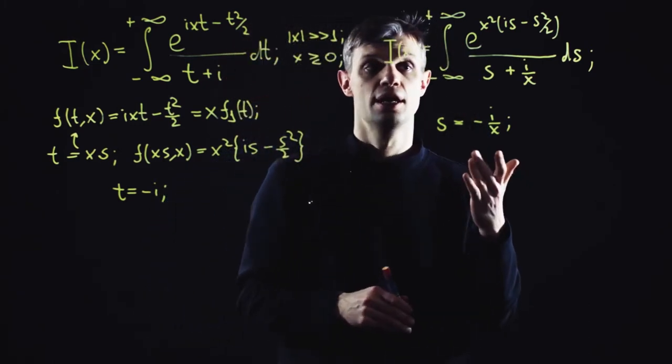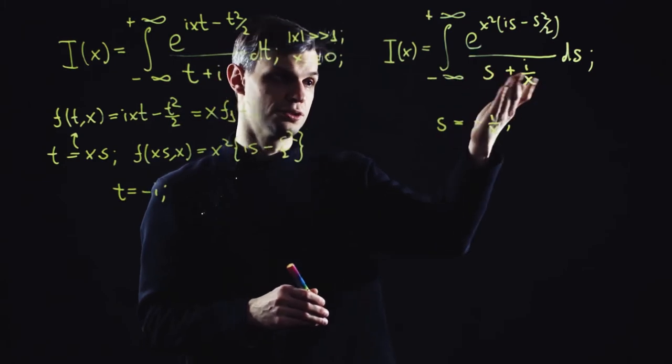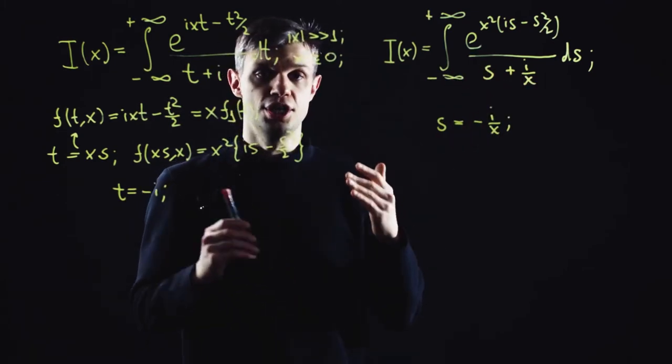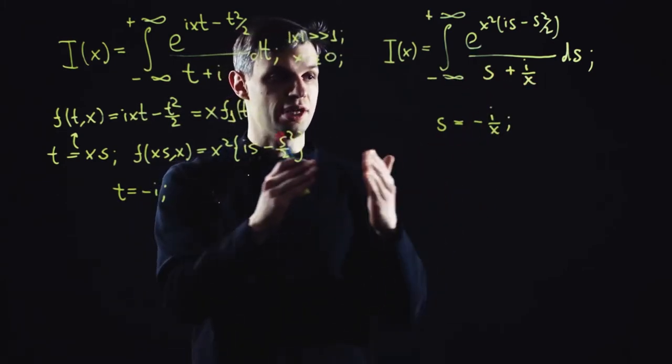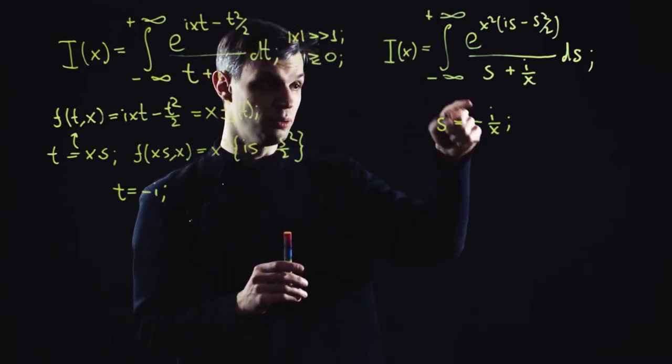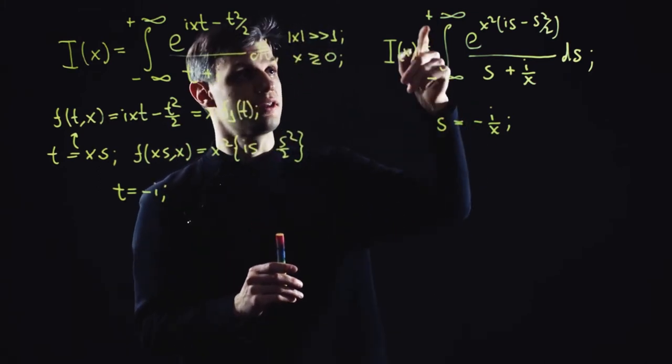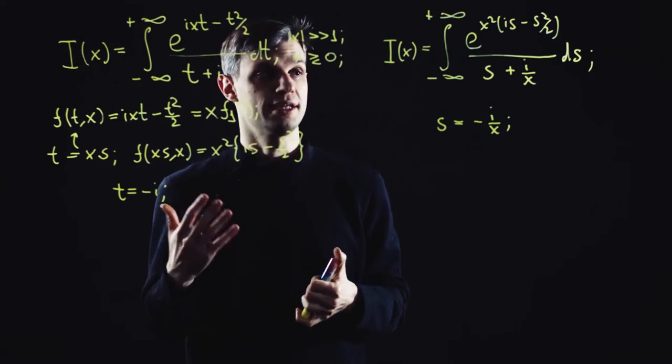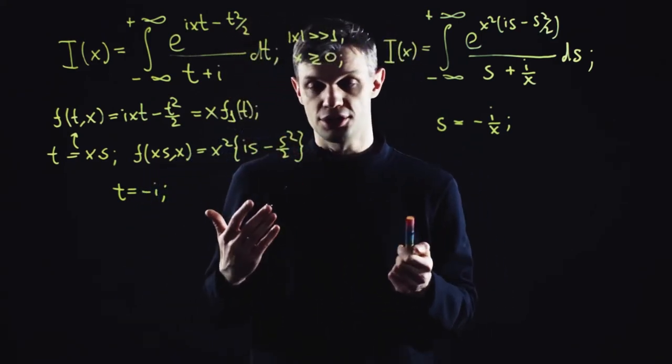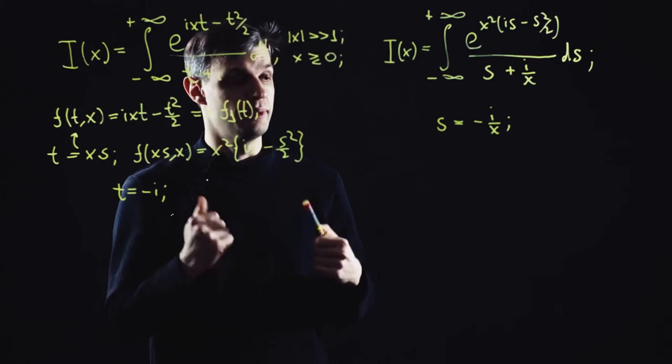And for a second, the real axis coincides with the integration contour. So as x changes smoothly from positive to negative x, the pole, the singularity, crosses the integration contour, which is unacceptable. So that's the kind of complication which I was talking about.